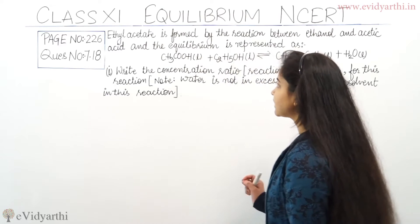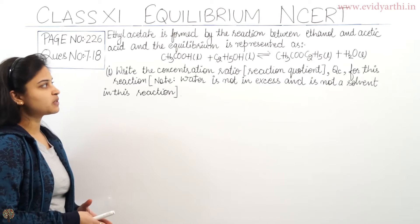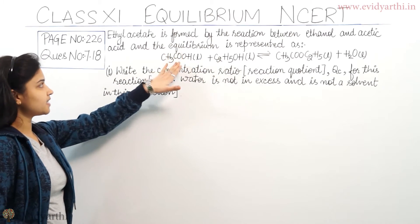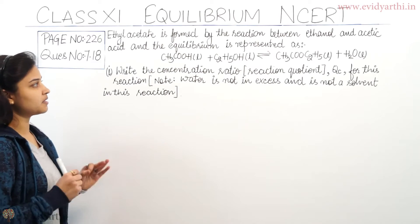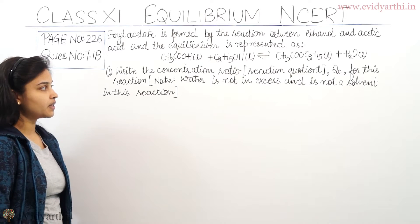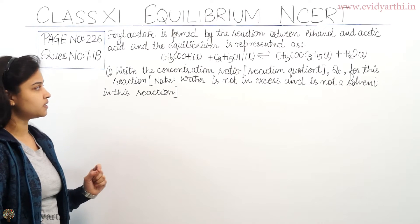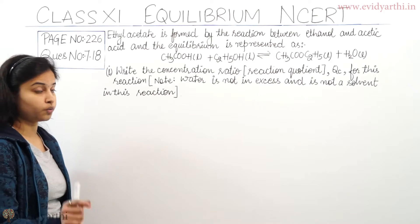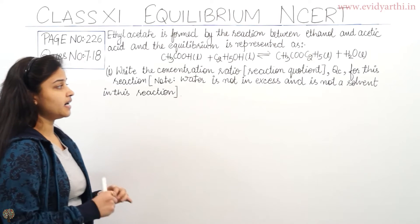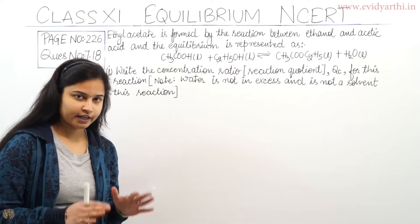The question is: ethyl acetate is formed by the reaction between ethanol and acetic acid, and the equilibrium is represented as such. Write the concentration ratio, that means reaction quotient Qc for this reaction. Note: water is not in excess and is not a solvent in this reaction.